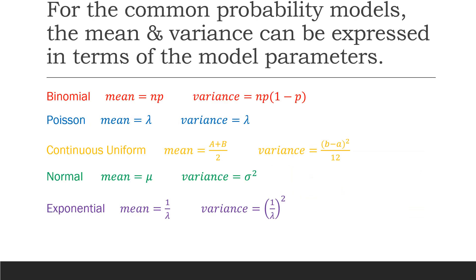We've seen some of the common probability models, and the mean and the variance for those common models can be expressed in terms of their model parameters. These probability models — we did not go through the process of deriving them. That is something many of you may have seen in other courses. If you're interested and haven't taken STAT 151 or 251 — or if you're a graduate student — those courses would derive these distributions, their probability density and probability mass functions, and actually derive the mean and variance formulas as well.